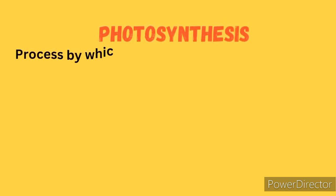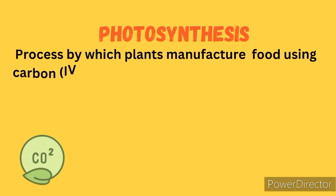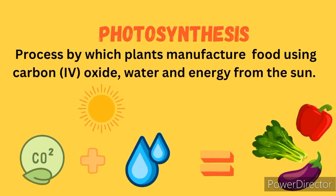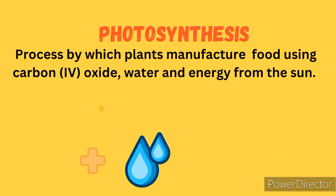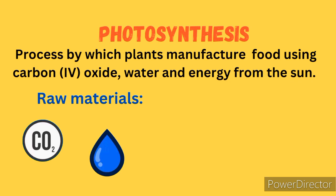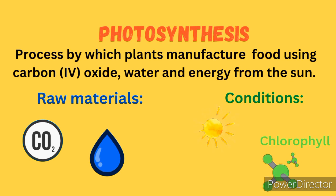Let us now proceed to photosynthesis. Photosynthesis is a process by which green plants manufacture food using carbon dioxide, water, and energy from the sun. The raw materials required for this process are two: number one, carbon dioxide, and number two, water. A condition required for this process is the presence of chlorophyll, which traps light energy.